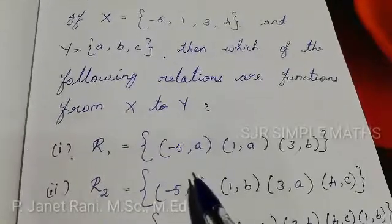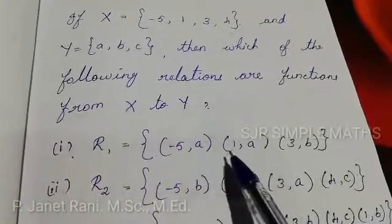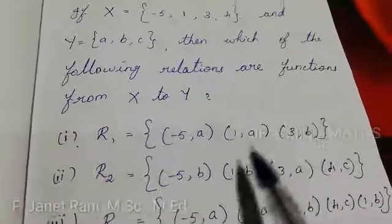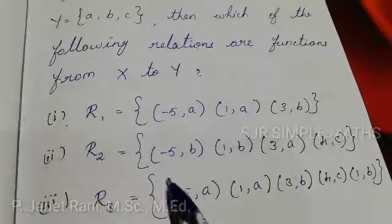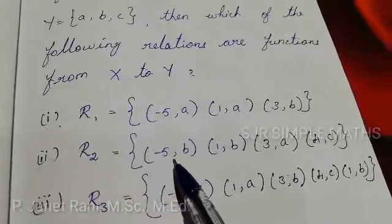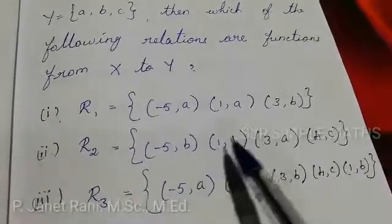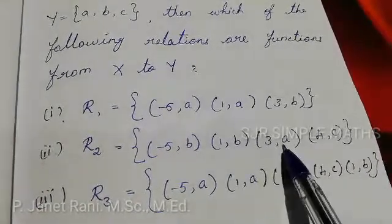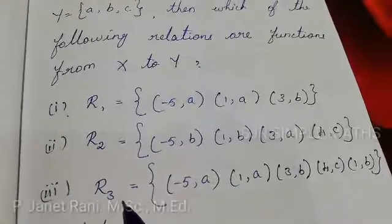R1 is equal to {(-5, a), (1, a), (3, b)}. R2 is equal to {(-5, b), (1, b), (3, a), (4, c)}.